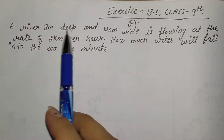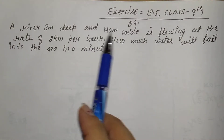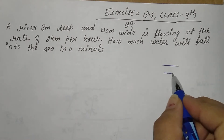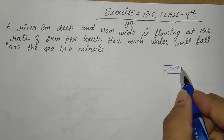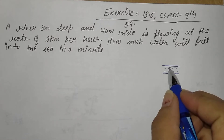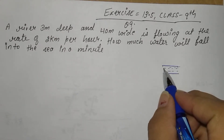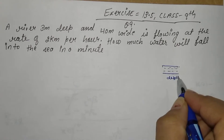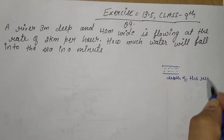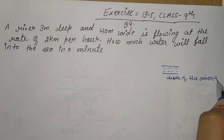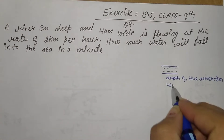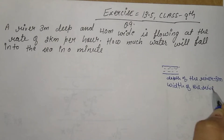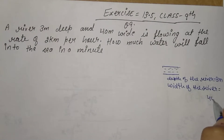The question states: a river is 3 meters deep and 40 meters wide. The depth of the river is 3 meters, and the width of the river is 40 meters.